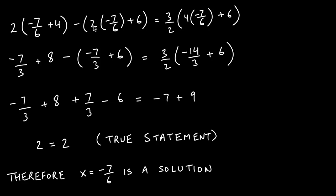Multiplying these two terms: 2 goes into itself once, 2 goes into 6 three times, leaving negative 7 over 3. The 6 just comes down unchanged. On the right-hand side, the 3/2 comes along for now, and 4 and 6 can be reduced — dividing both by 2 gives 2 over 3.